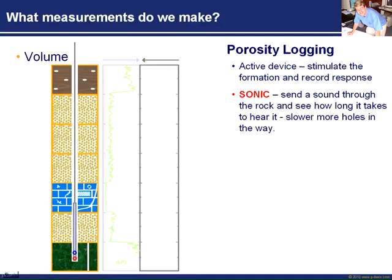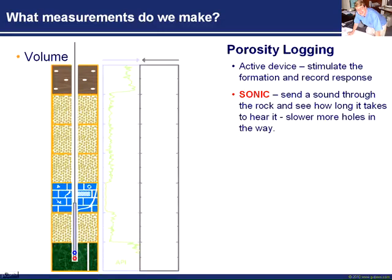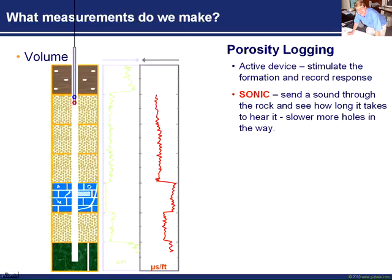The first measurement is the sonic log. We send sound waves through the rock and see how long they take to travel from the transmitter to the receiver. The time it takes tells us about the properties of that rock. If it takes a long time, there are lots of holes in the way. Sound travels much quicker through solids than through liquids or air. So if there are more holes in the reservoir, that tends to slow the sonic signal down. In high-porosity zones the sonic slows down, while in carbonates with lower porosities we see much faster velocity.